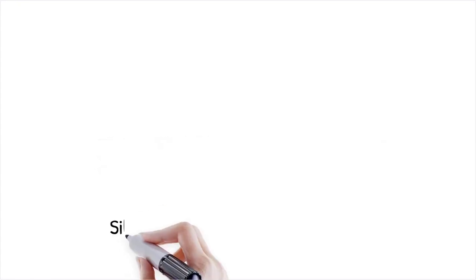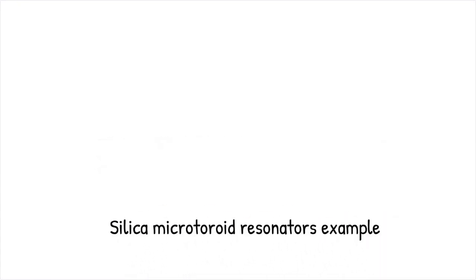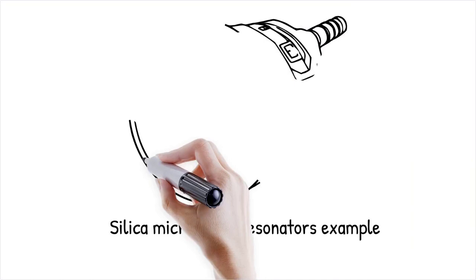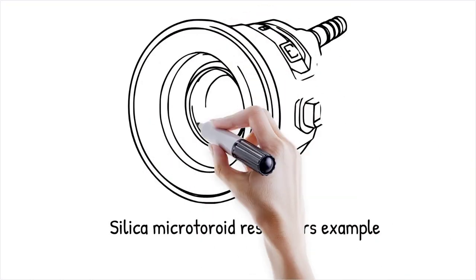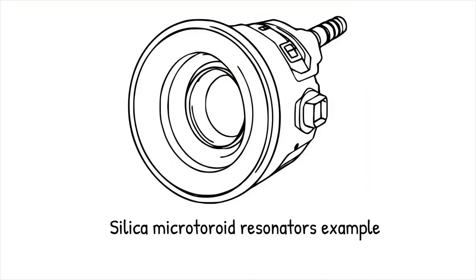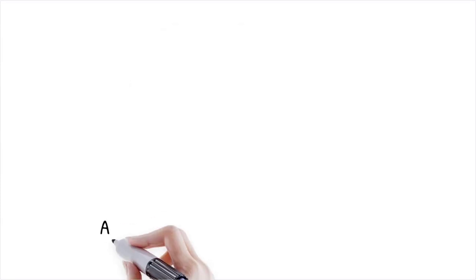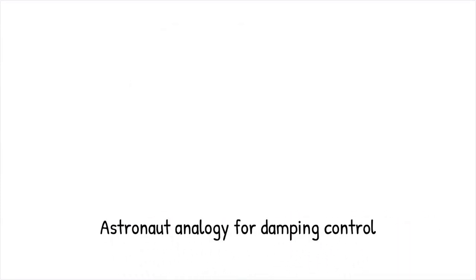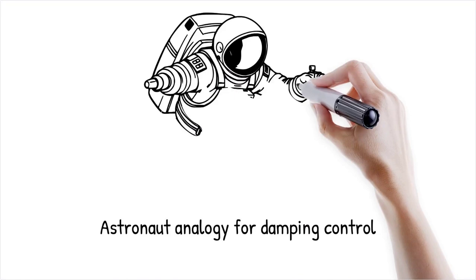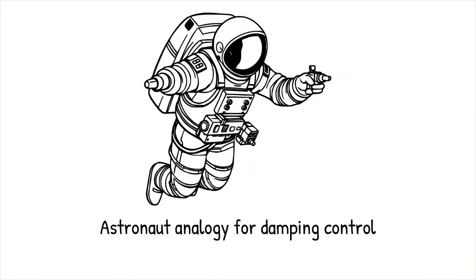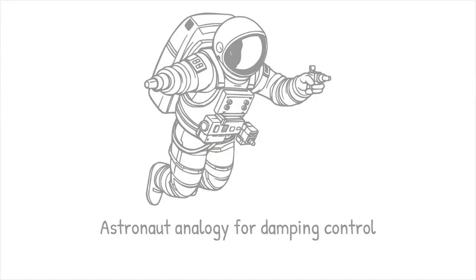Silica microtoroid resonators, for example, use optomechanical coupling to achieve near-zero damping by compensating energy loss with controlled optical excitation. This is like an astronaut using tiny bursts of air to counteract friction in space, allowing controlled stabilization of motion.